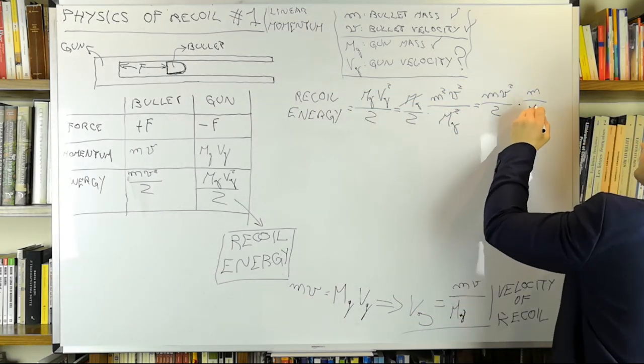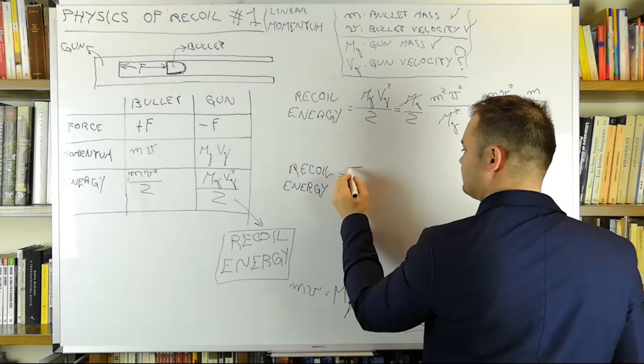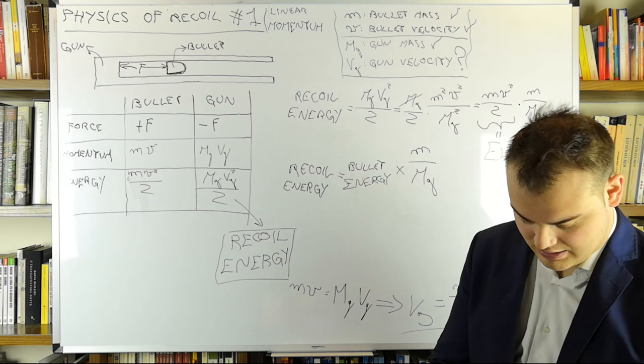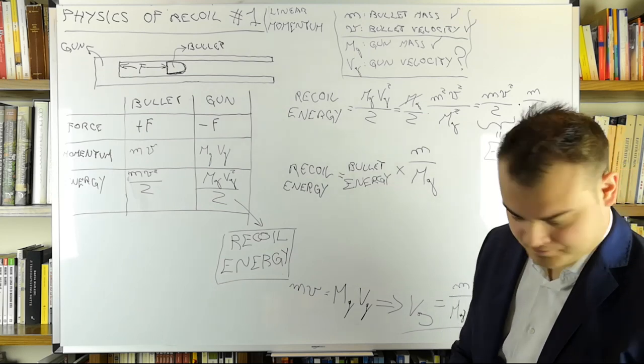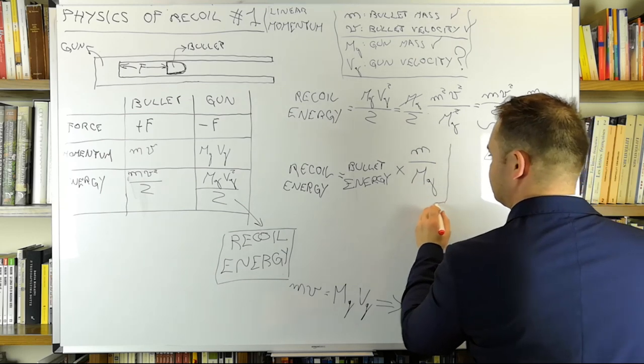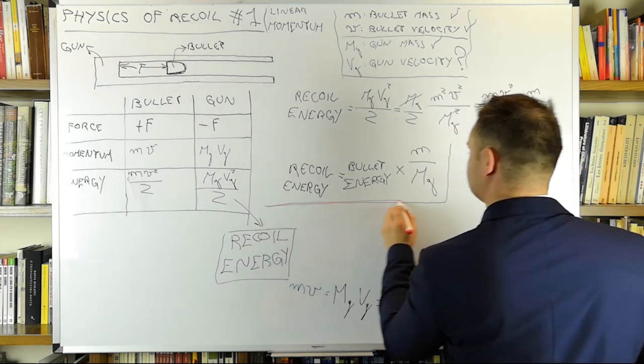Here comes the part you were waiting for. You can calculate the recoil energy very easily. Just multiply the bullet energy by the ratio between the bullet and gun masses. All what I've told you until now is only needed to justify this relation, which is the only thing you will have to remember.